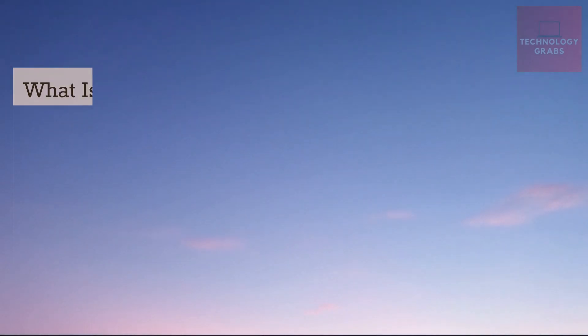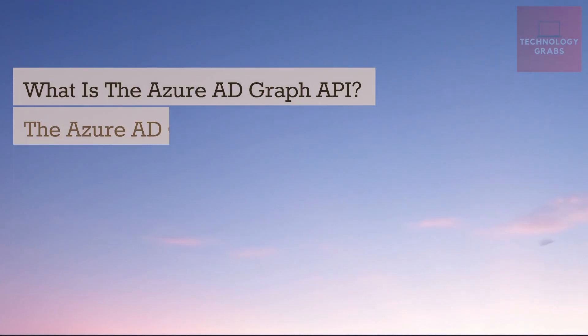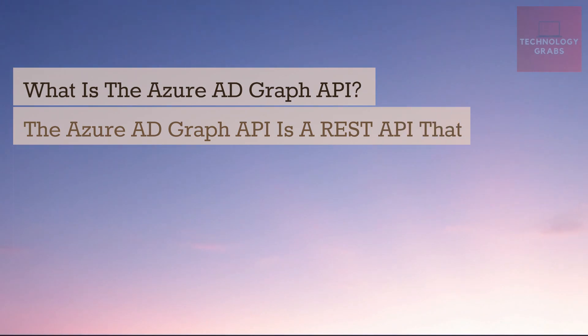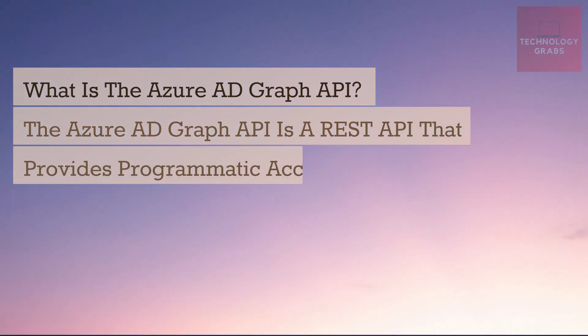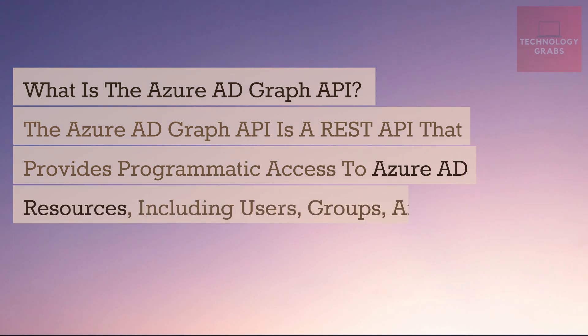What is the Azure AD Graph API? The Azure AD Graph API is a REST API that provides programmatic access to Azure AD resources, including users, groups, and applications.